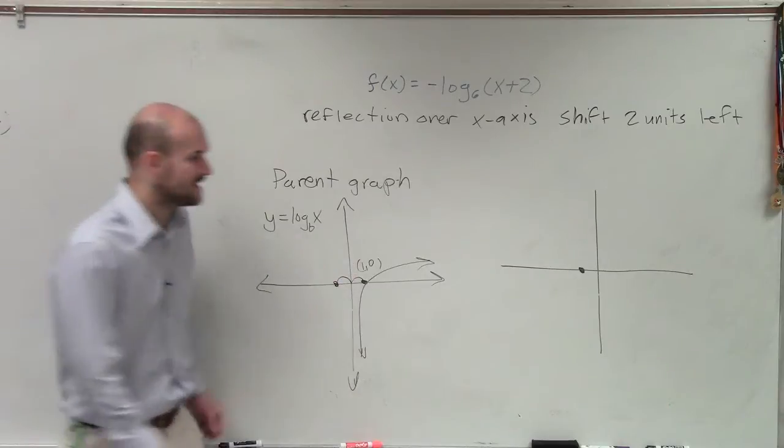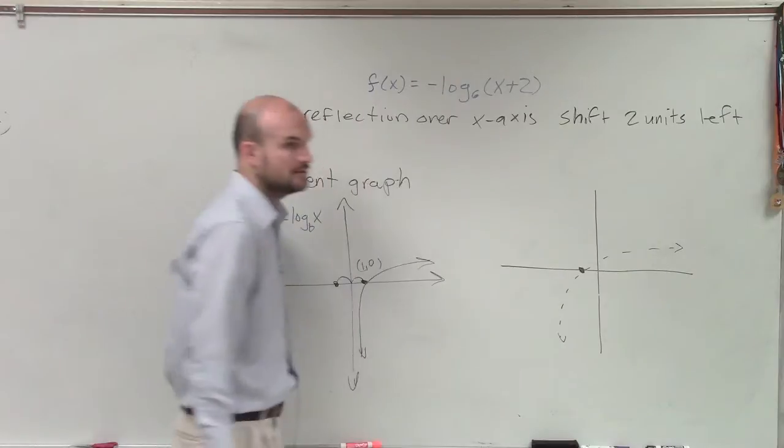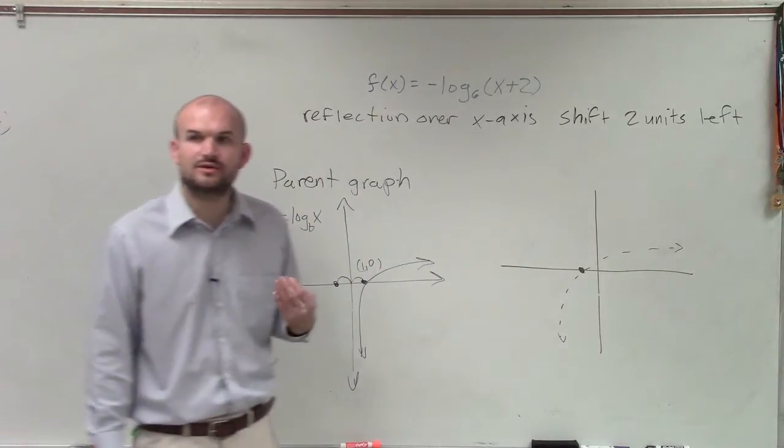So my new graph is now going to contain a point negative 1 comma 0. It's going to look exactly the same, but now all I did was I shifted it 2 units to the left.